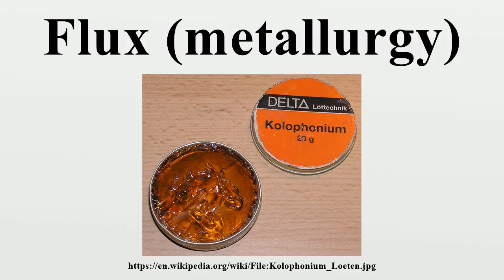In high-temperature metal joining processes, the primary purpose of flux is to prevent oxidation of the base and filler materials. Tin-lead solder attaches very well to copper, but poorly to the various oxides of copper, which form quickly at soldering temperatures. Flux is a substance which is nearly inert at room temperature, but which becomes strongly reducing at elevated temperatures, preventing the formation of metal oxides.